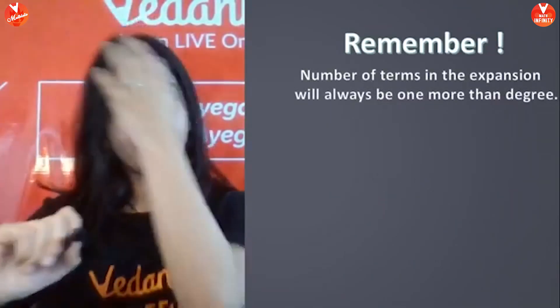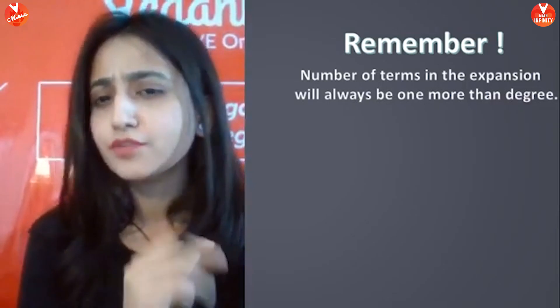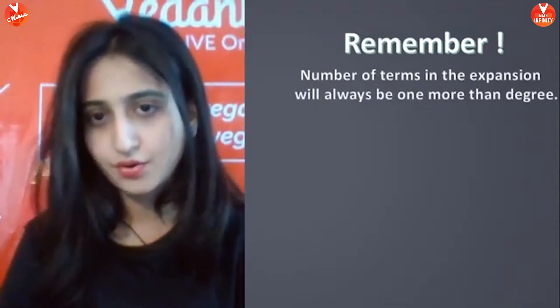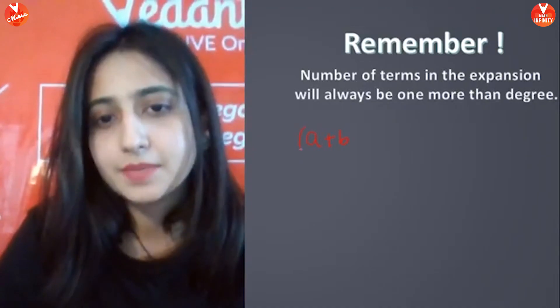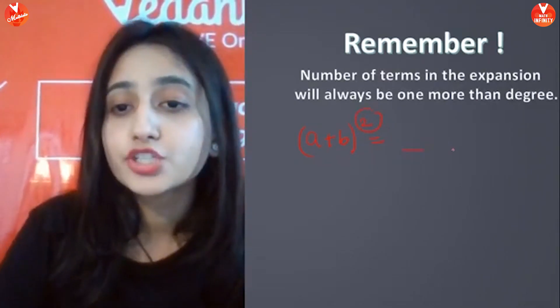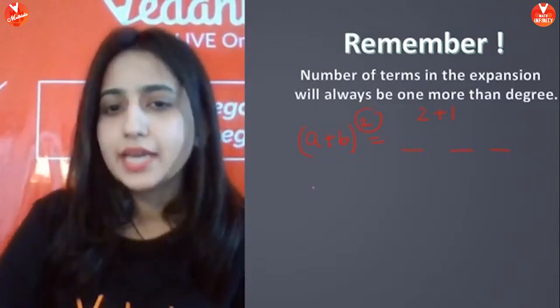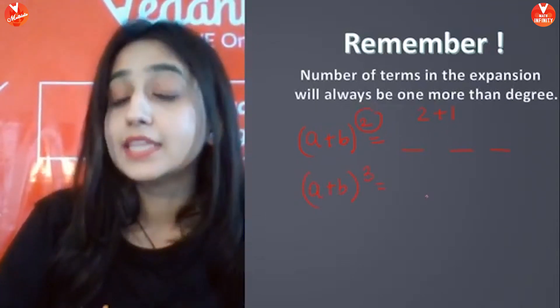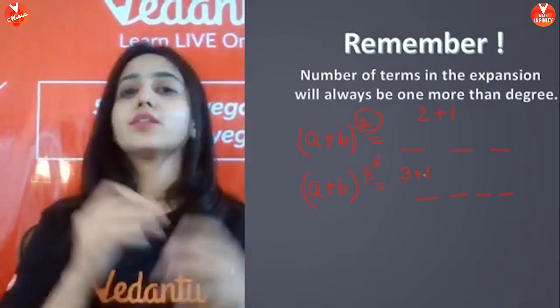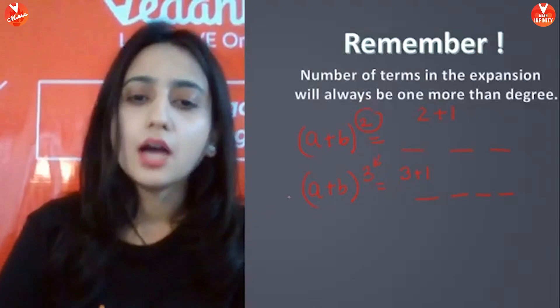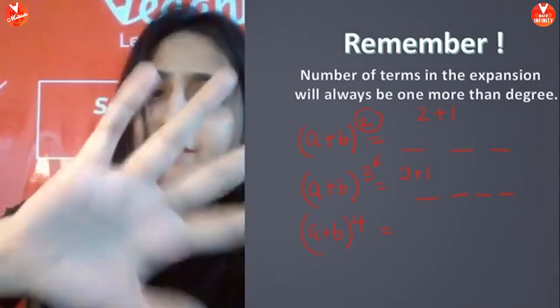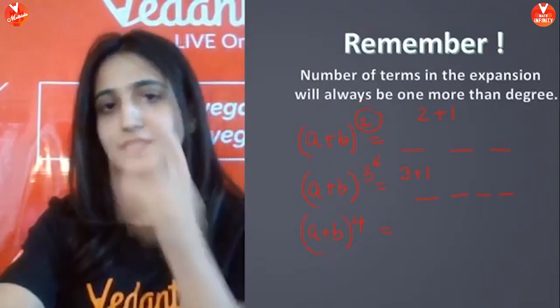First thing that you have to remember here is that the number of terms in the expansion will always be more than the degree. What does it mean? If I say I have a plus b whole square, so here what is the degree? 2 is the degree. So the number of terms in the expansion will be 3, which is 2 plus 1. If I have a plus b cube, then there will be 4 terms in the expansion because the degree is 3, we will add 1 to the degree and those will be the number of terms in the expansion. This is the thing you need to remember first.